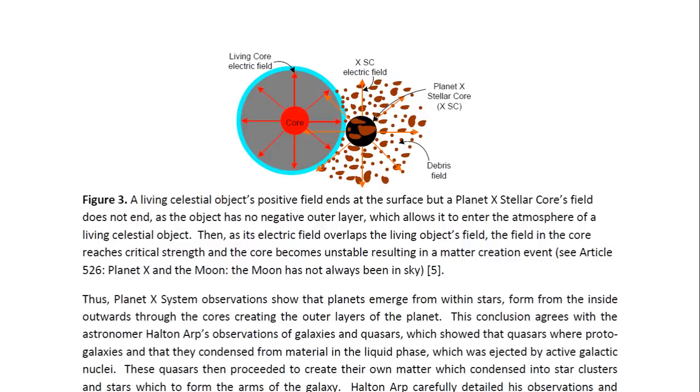And when the core becomes unstable, it ejects light. Light comes out of it. And then the light, because of the very strong electric field, turns into matter. And you may look at Article 526, entitled Planet X and the Moon. The Moon has not always been in the sky for more details.